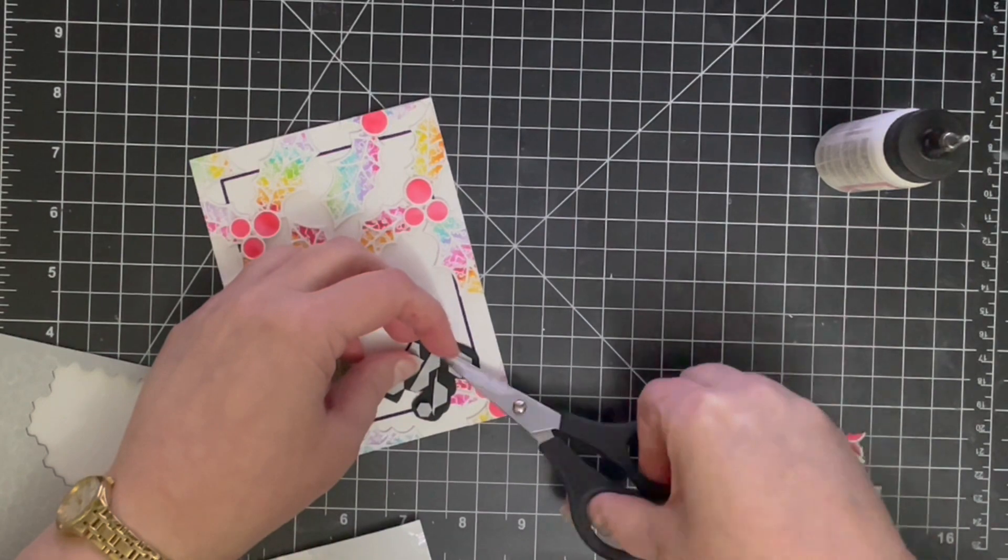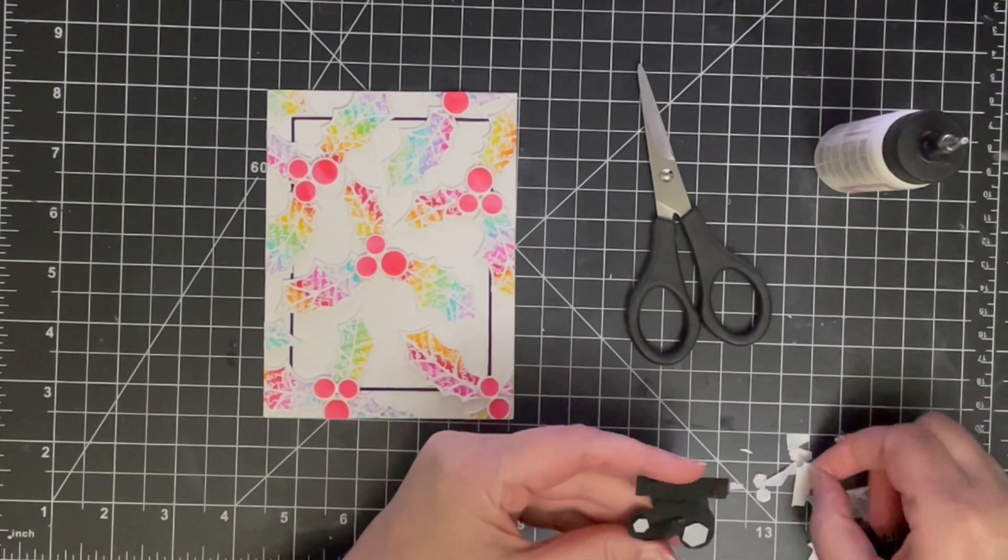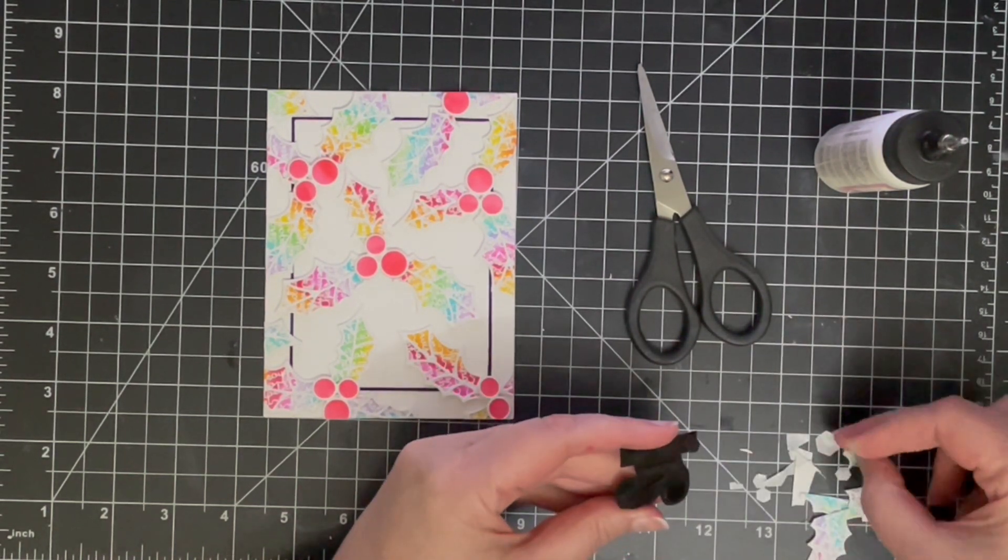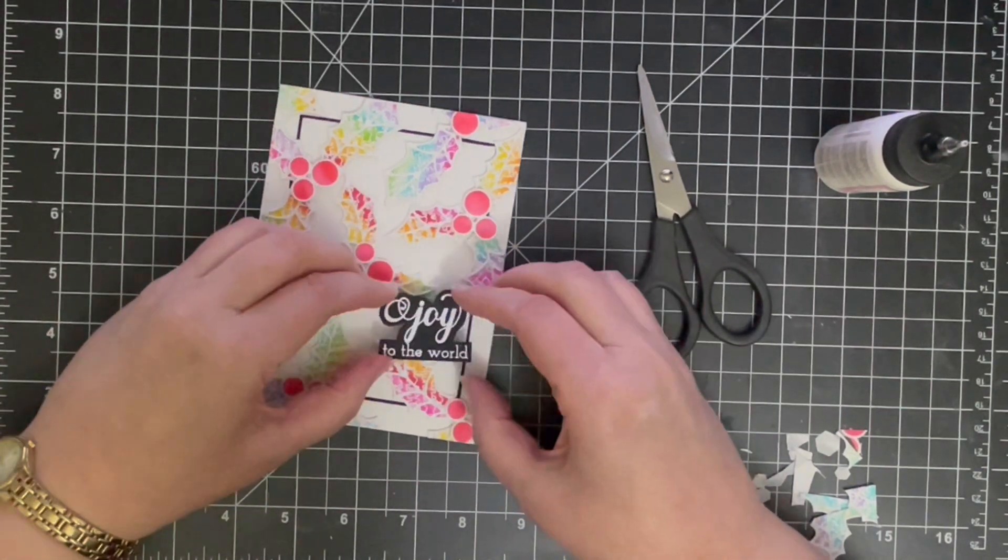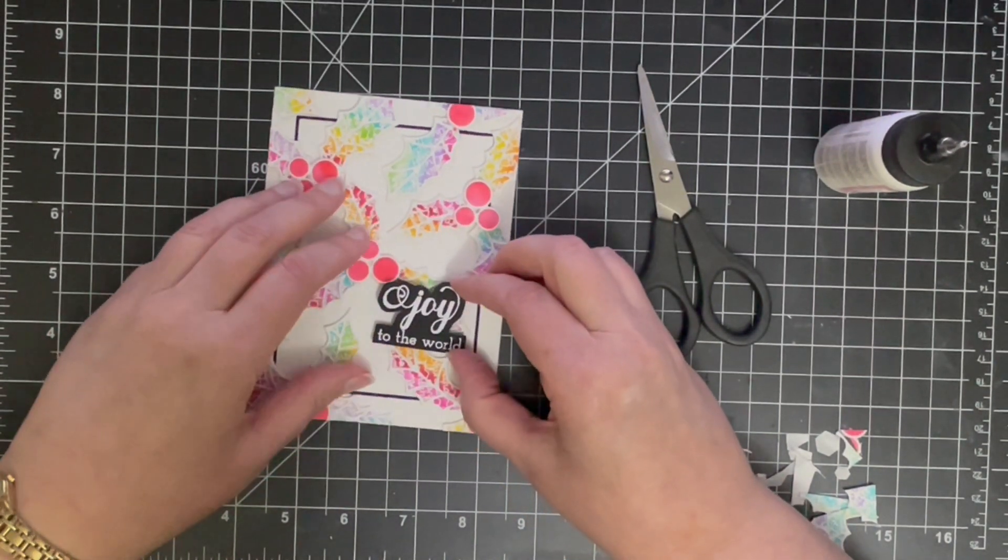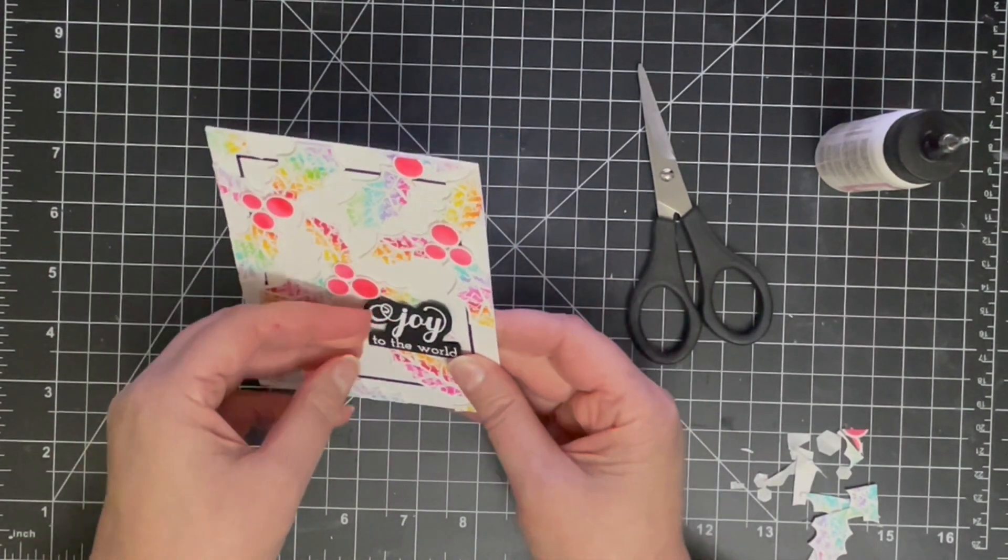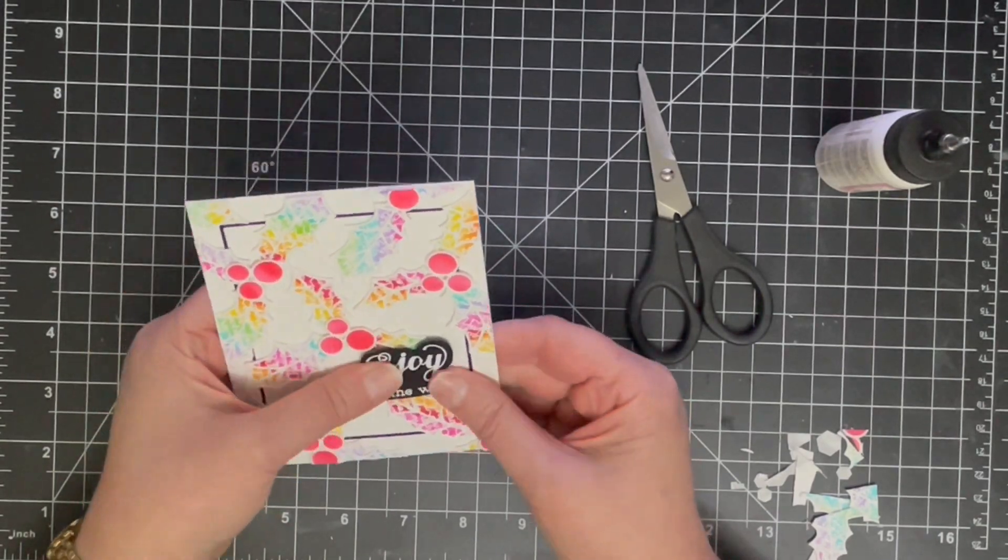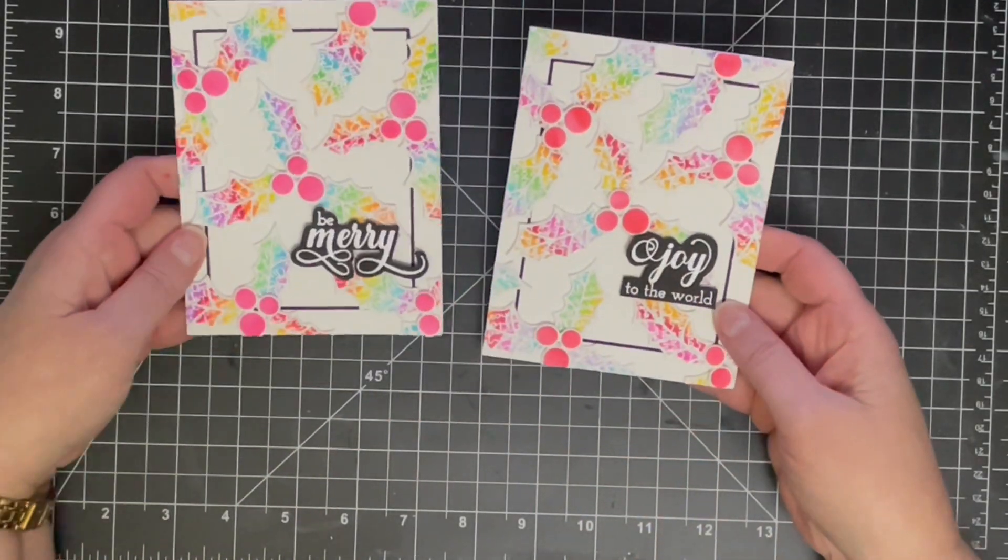So I'm using some foam adhesive on the back of the sentiment so I can pop it up, and there are actually some parts of the sentiment that I added two lots of the foam adhesive because I needed it to sort of sit up above those holly leaves so it sits relatively flat. And I didn't get it on straight, so try again and see how I go the next time.